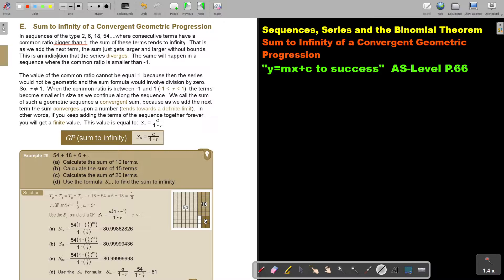This is an indication that the series diverges. The same will happen in a sequence where the common ratio is smaller than negative 1. The value of the common ratio cannot be equal to 1 because then the series would not be geometric and the sum formula would involve division by 0. So remember, it cannot be 1.